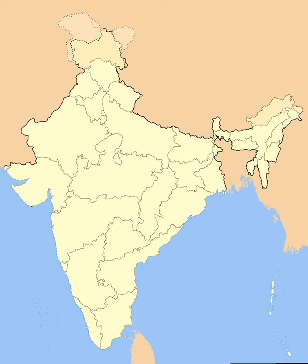Andhra Pradesh was created with the merger of Andhra state with the Telugu-speaking districts of Hyderabad state in 1956. Kerala was created with the merger of Malabar district and the Kasaragod Taluk of South Kanara districts of Madras state with Travancore-Cochin. Mysore state was reorganized with the addition of Bellary and South Kanara districts from Madras state, the districts of Belgaum, Bijapur, North Kanara, and Dharwad from Bombay state, the Kannada-majority districts of Bidar, Raichur, and Gulbarga from Hyderabad state, and the province of Coorg. The Laccadive Islands were united and organized into the union territory of Lakshadweep.